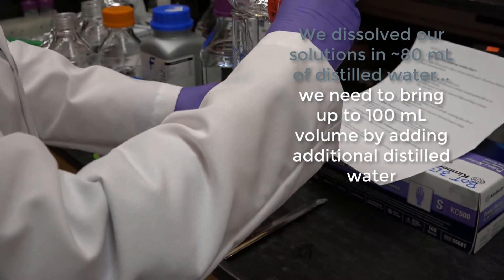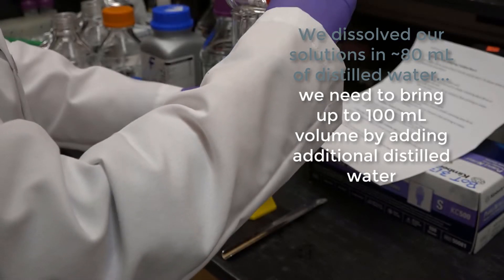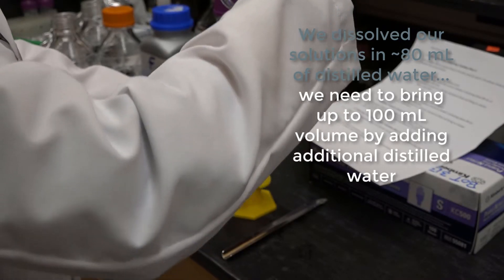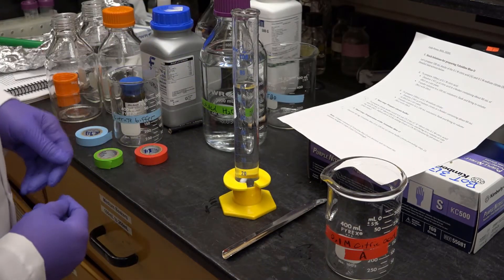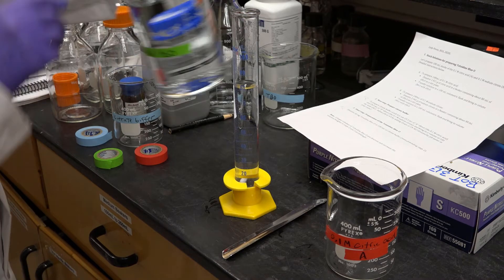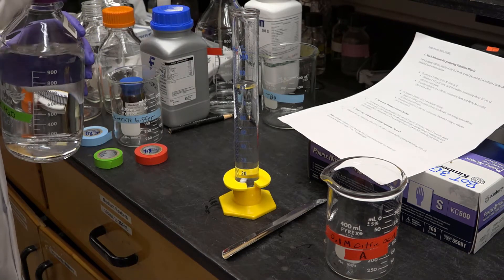If you have a volumetric flask, that's the absolute best, but to make these biological stains, it doesn't have to be perfect. So we can use a graduated cylinder and then bring it to volume, 100 mils.